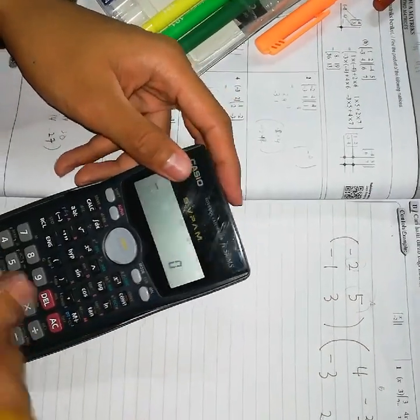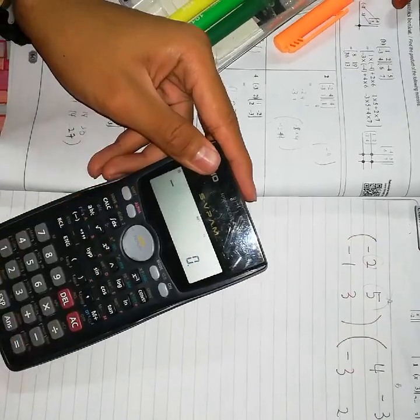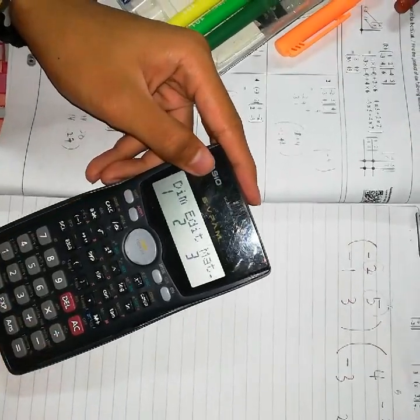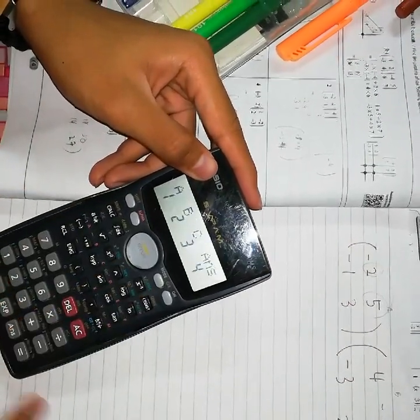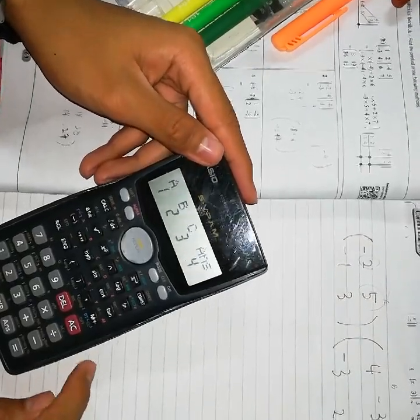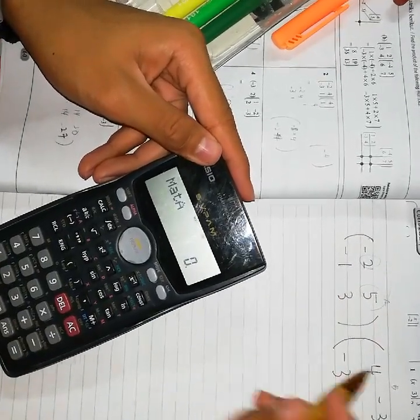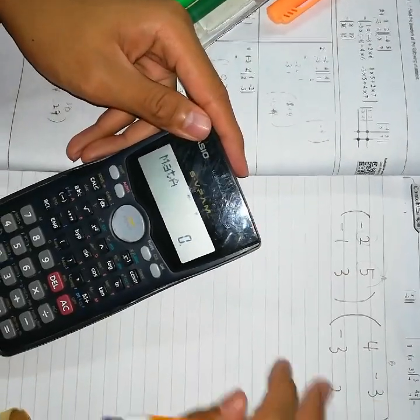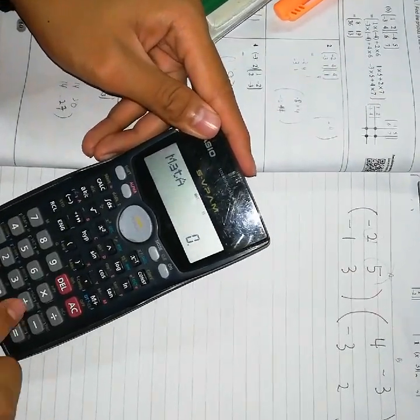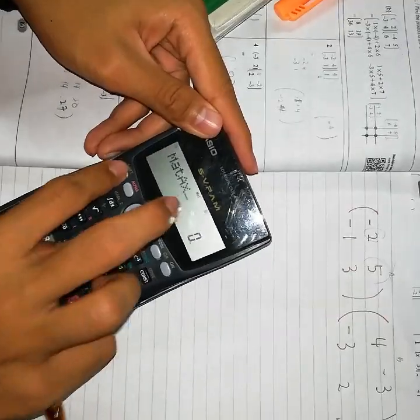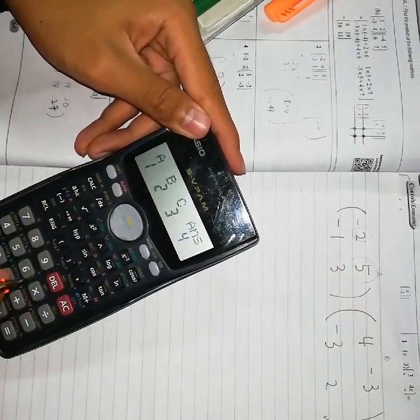Tekan balik sini, shift dan mat lagi. Kita akan tekan mat lagi sekali sebab kita dah ada nilai dia kan. So, kita masukkan A. Sekarang ni soalan ni darab kan, sebab kurungan ke kurungan darab kan. Tambah kan. So, darab dengan tekan balik sini, shift, mat, B.